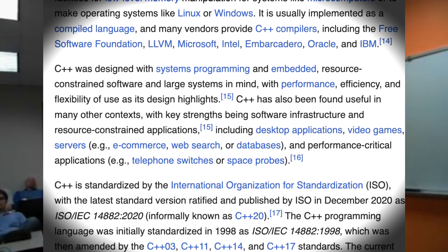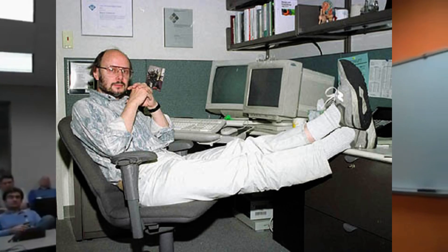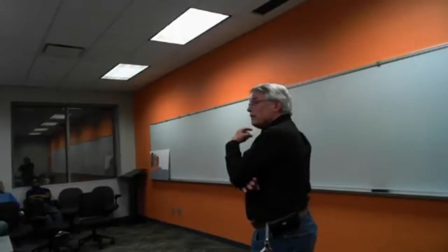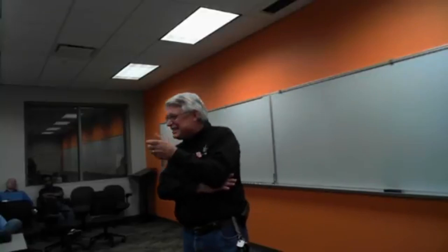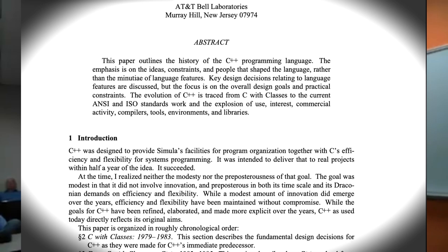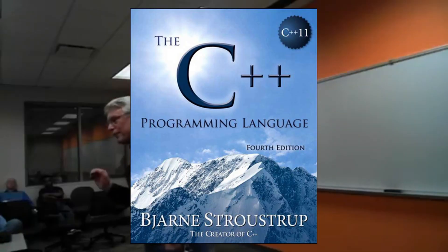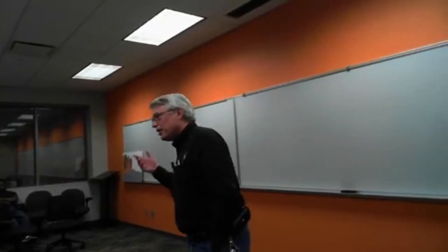Where did C++ come from? Who invented it? Bjarne Stroustrup. He's Danish. He wrote a paper in 1980 called 'C with Classes.' In 1983, he changed the name to C++. In 1986, he wrote the very famous book, 'The C++ Programming Language,' that convinced all the C programmers in the world that this was the language they should all be using.